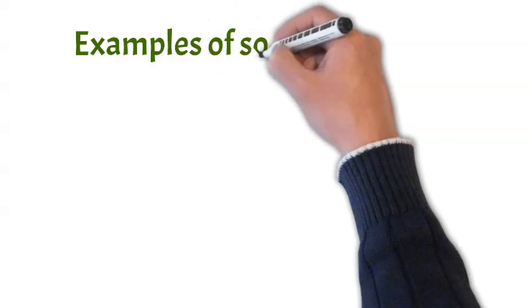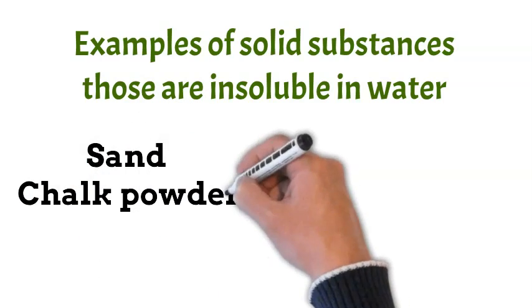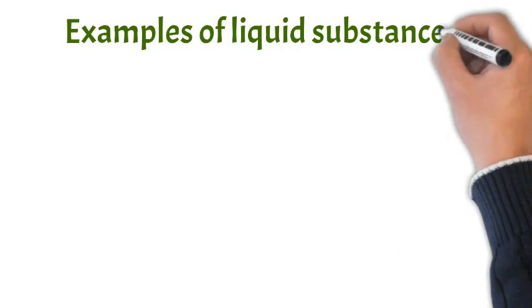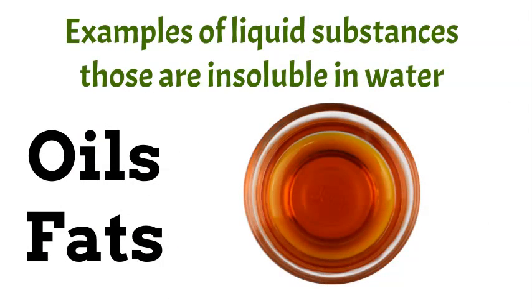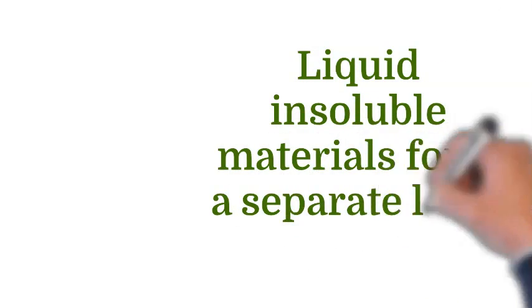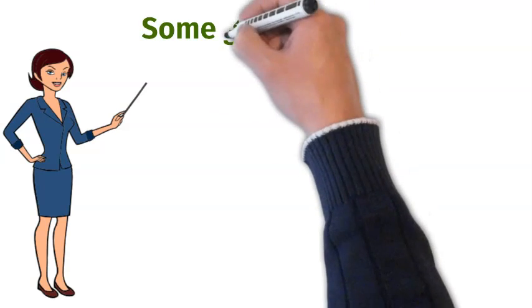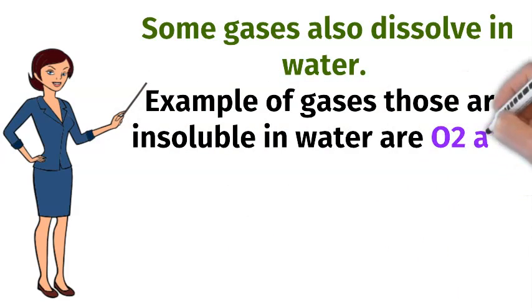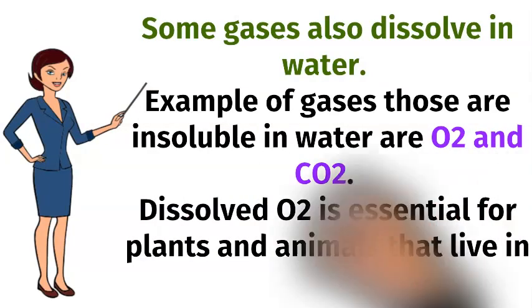Examples of solid substances that are insoluble in water are sand, chalk powder, sawdust, etc. Examples of liquid substances that are insoluble in water are oils, fats, etc. Liquid substances insoluble in water form a separate layer in water. Some gases also dissolve in water. Examples of gases that are soluble in water are oxygen and carbon dioxide. Dissolved oxygen is essential for plants and animals that live in water.